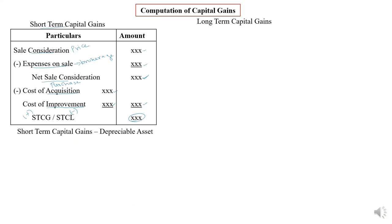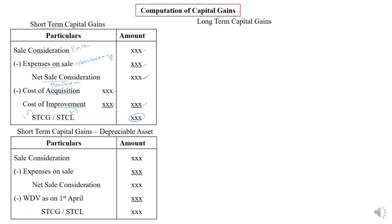For a depreciable asset — where the assessee uses the asset for business or profession and charges depreciation under the written down value method — the format up to net sale consideration is the same: selling price minus expenses on sale equals net sale consideration. From the net sale consideration, deduct the written down value as on 1st April of the year of sale. If the answer is positive you arrive at short-term capital gain; if negative, short-term capital loss. That's all with short-term capital gain.